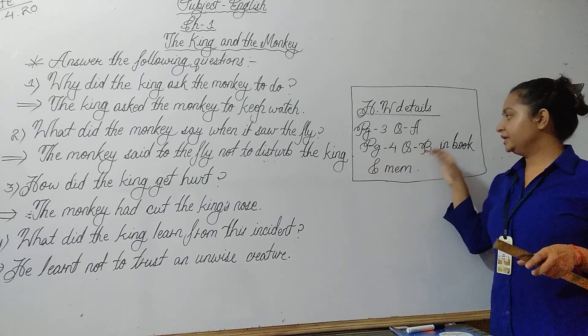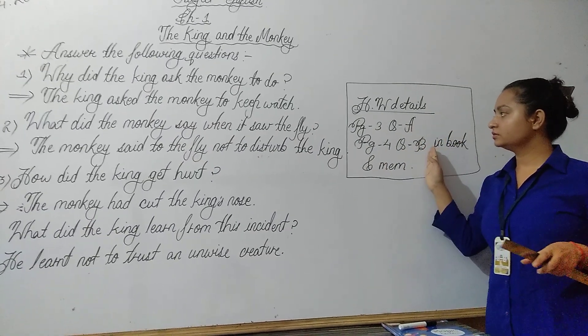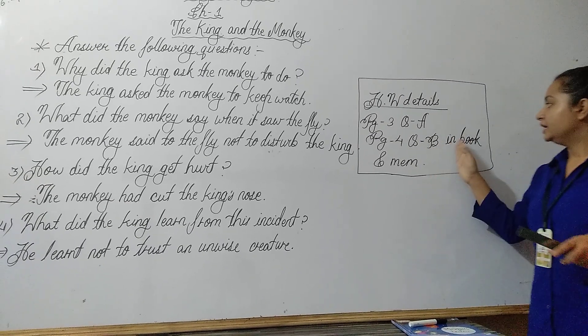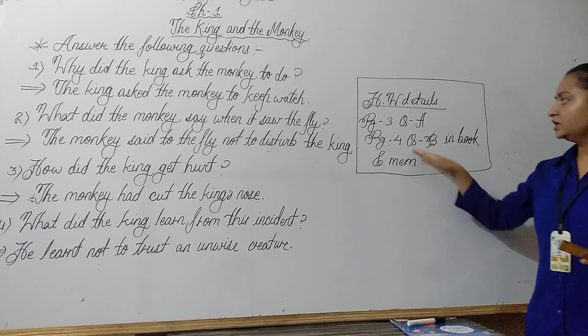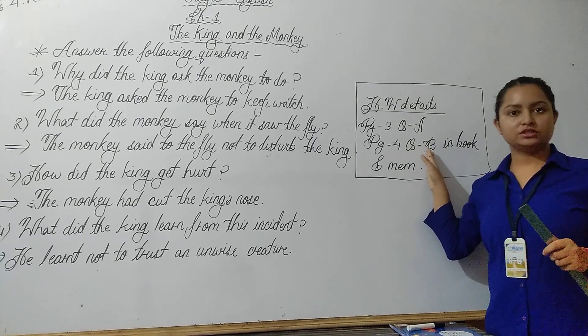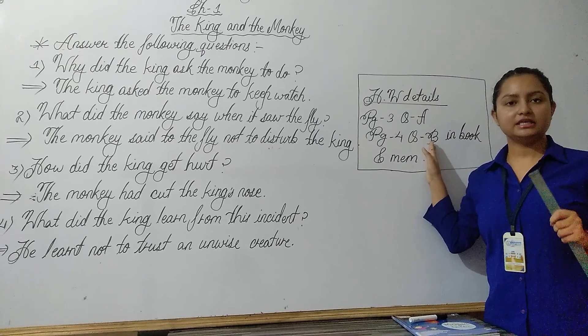Page number 4, question number B, in book only. This both homework you have to do in your book only, in book and memorize. In question number B, there are options type questions. It is very easy if you have understood the whole story.